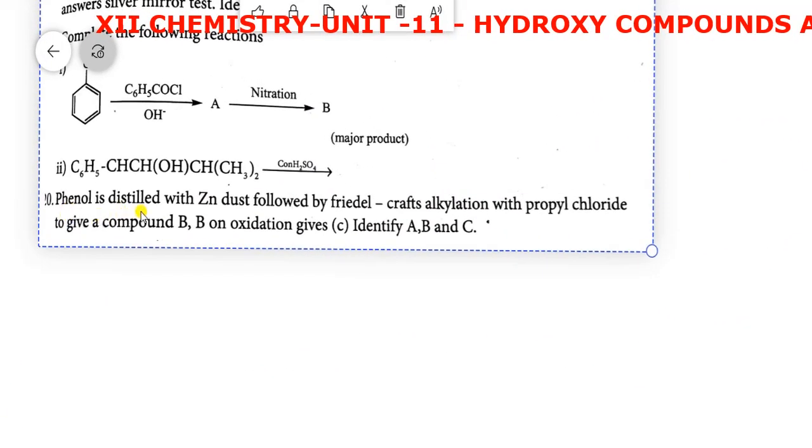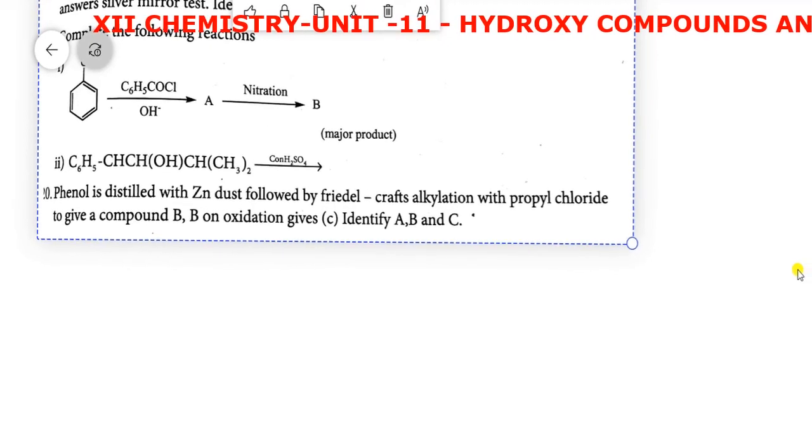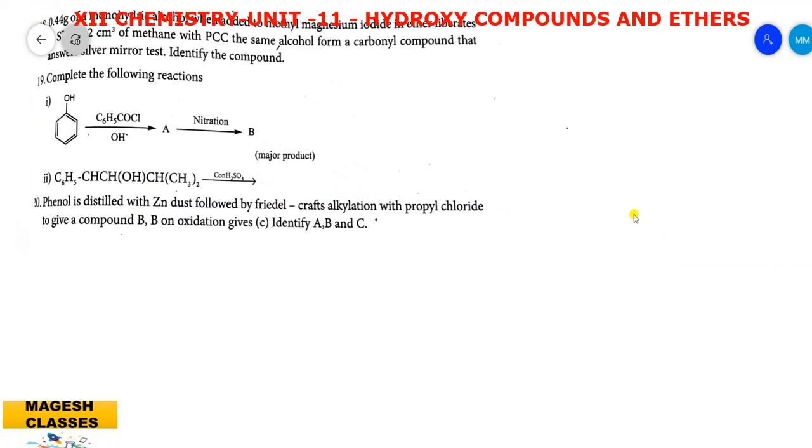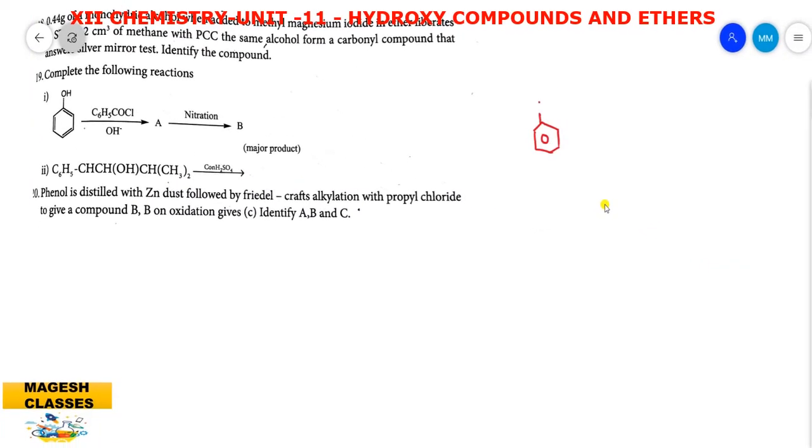Question number 20: Phenol is distilled with the zinc dust followed by Friedel-Crafts alkylation with propyl chloride to give a compound B. B on oxidation gives C. Identify A, B and C. When phenol is distilled with the zinc dust, what do you get? This is the phenol. Zinc dust. You get the product benzene and the zinc oxide.